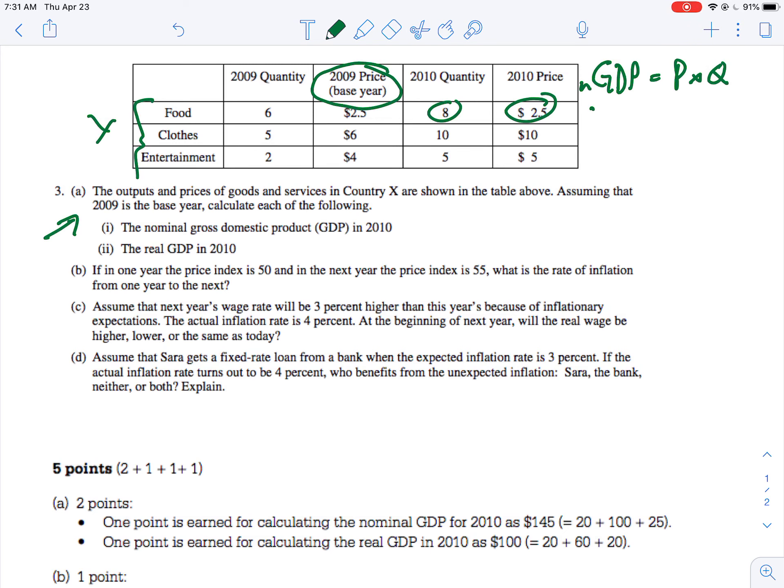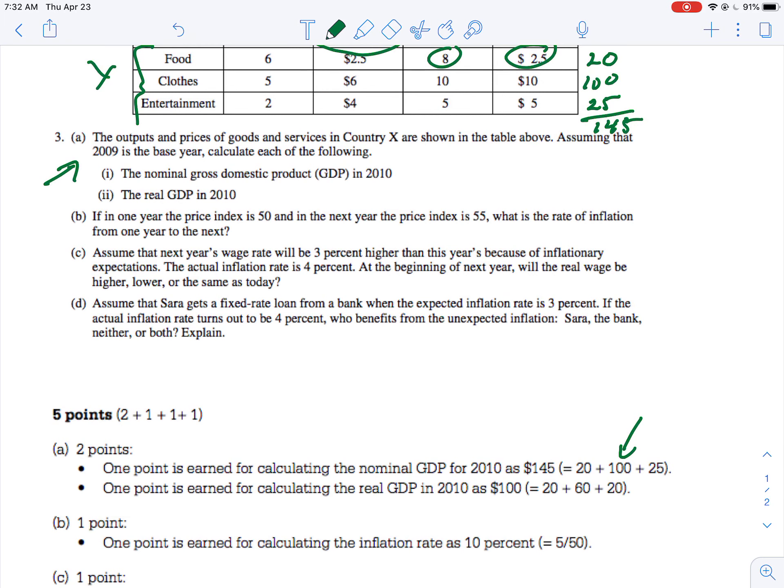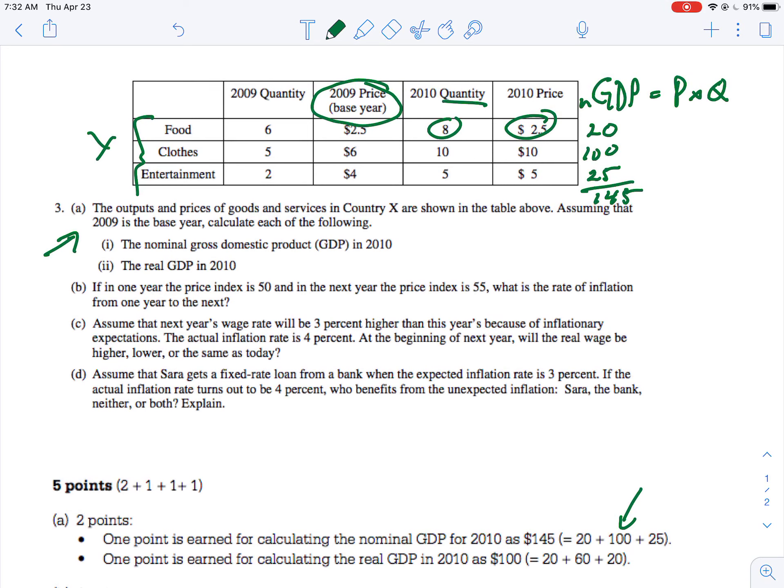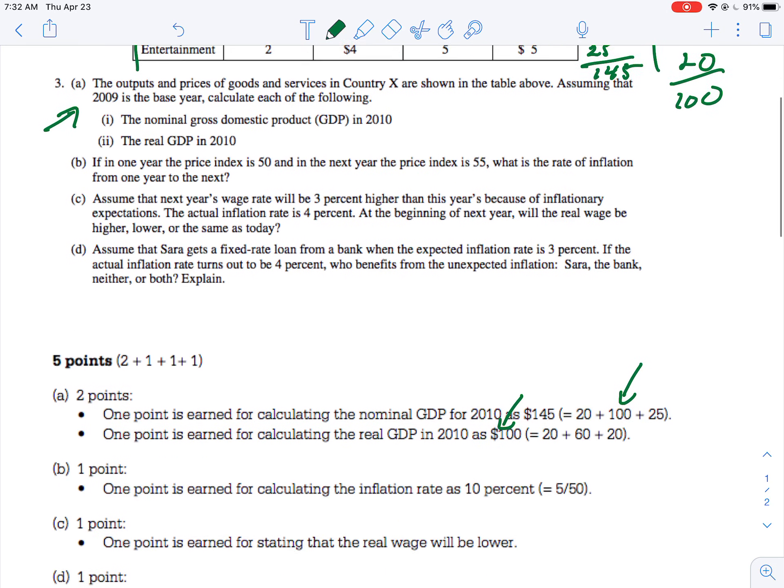So 8 times 2½ is 20, 10 times 10 is 100, 5 times 5 is 25, and that adds up to 145. So you see that down here. There is your nominal GDP. And then real GDP in 2010, all you're going to do is take this same quantity but multiply it by the price in the base year. So prices didn't change for food, so that is still 20. Prices went up quite a bit in clothes. So you've got 60 when last year it was $6 and now it's $10. And then 20 here, so that gives us 100, which is what we see right there. Okay, so not too terrible.